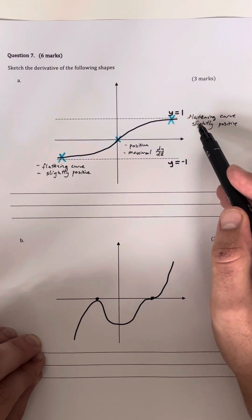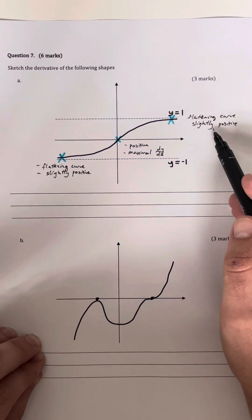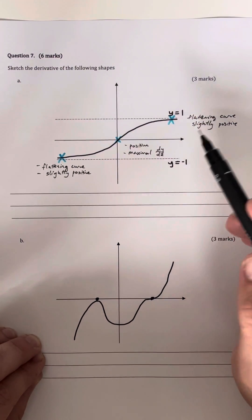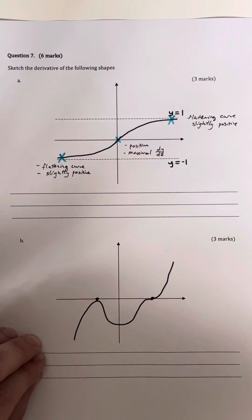Same thing on the right hand side, we're a flattening curve because we're approaching y is equal to positive one asymptote but we're still slightly positive. We've never flattened off yet because by definition asymptotes you always get closer to but you don't necessarily touch them.